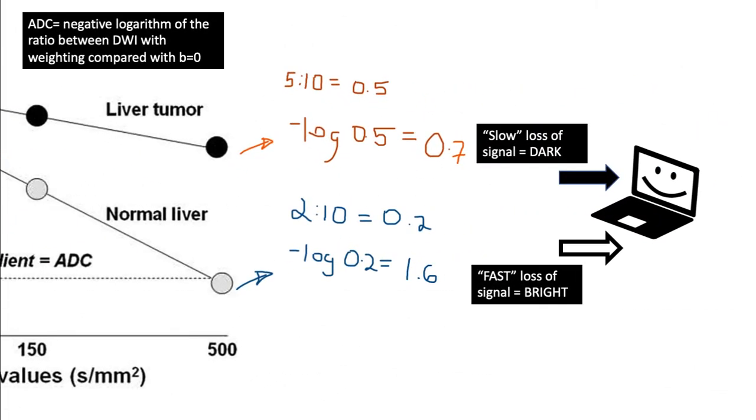Then we ask the MRI machine to compute an ADC value. Those with slow loss of signal will be plotted as dark on the map, while fast loss of signal appears bright, and that gives us the ADC image.